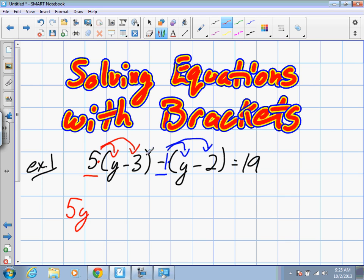5y. What is negative 3 times 5? Negative 15. Good. Negative 1 times y? Negative y. Good. And negative 1 times negative 2? Positive 2. Good.